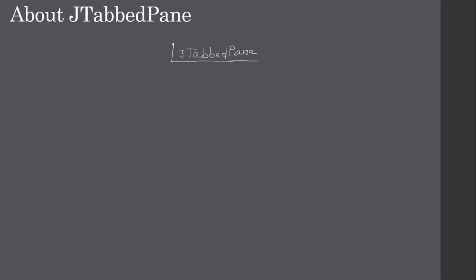Now let's talk about the JTabbedPane. You can construct a JTabbedPane using the empty constructor — there are other versions of the constructor also. Once you use the empty constructor, you can call set versions of the functions on JTabbedPane to perform settings on the tabbed pane.